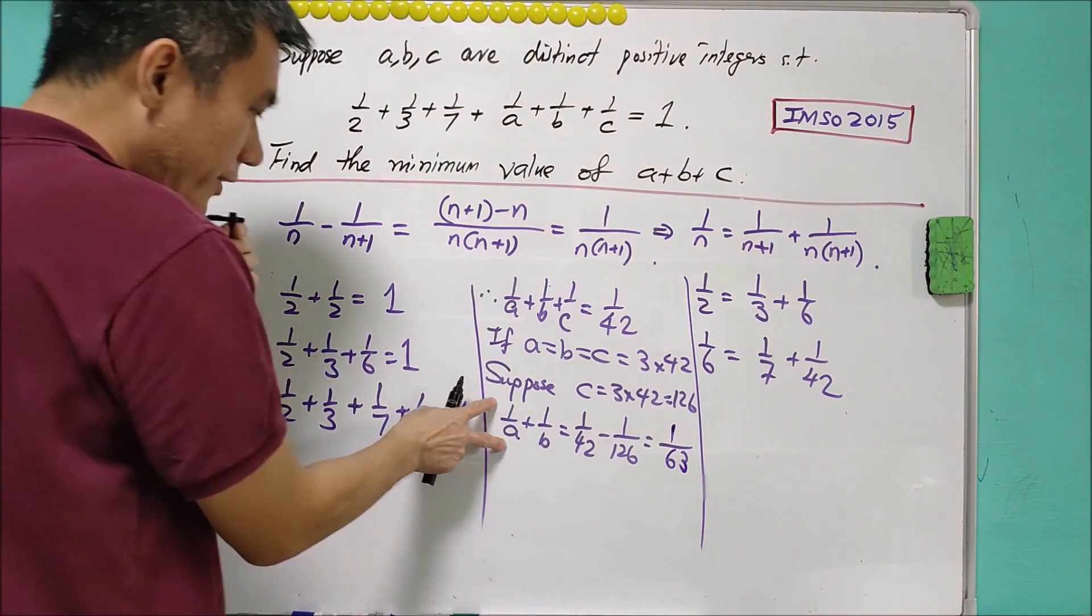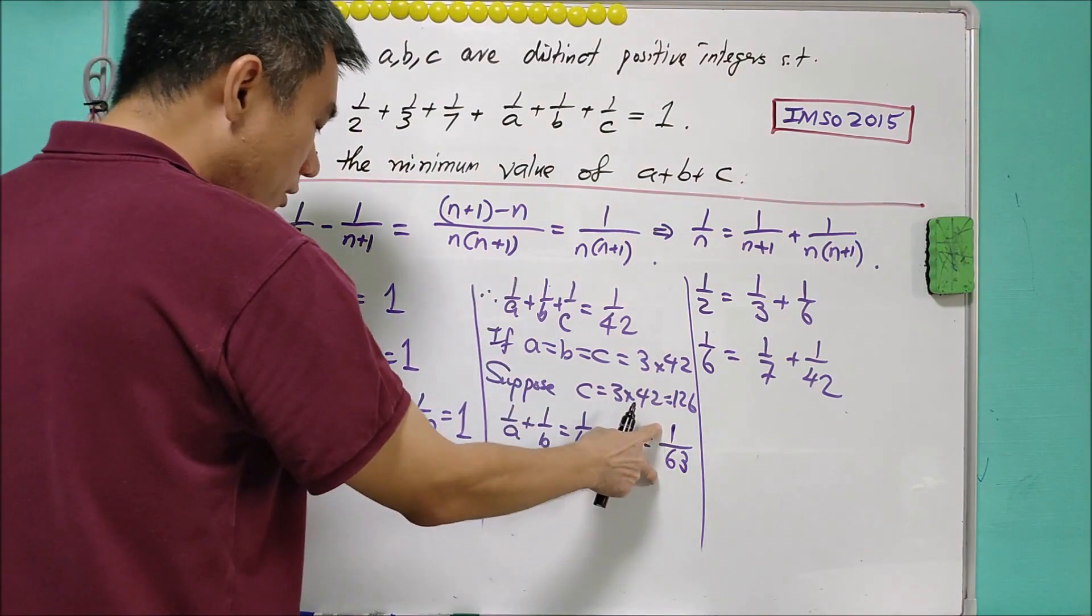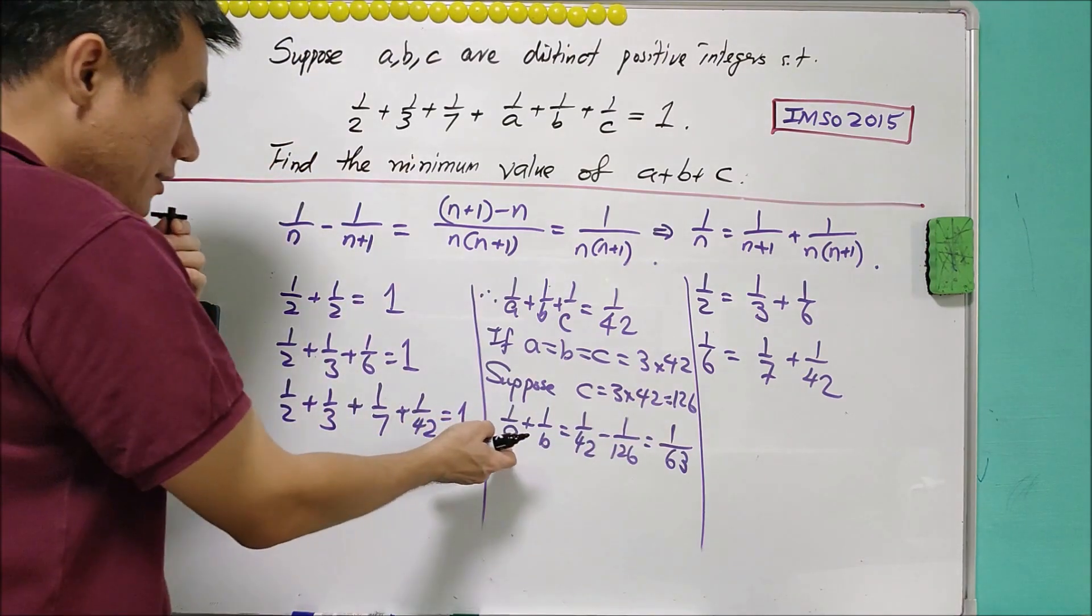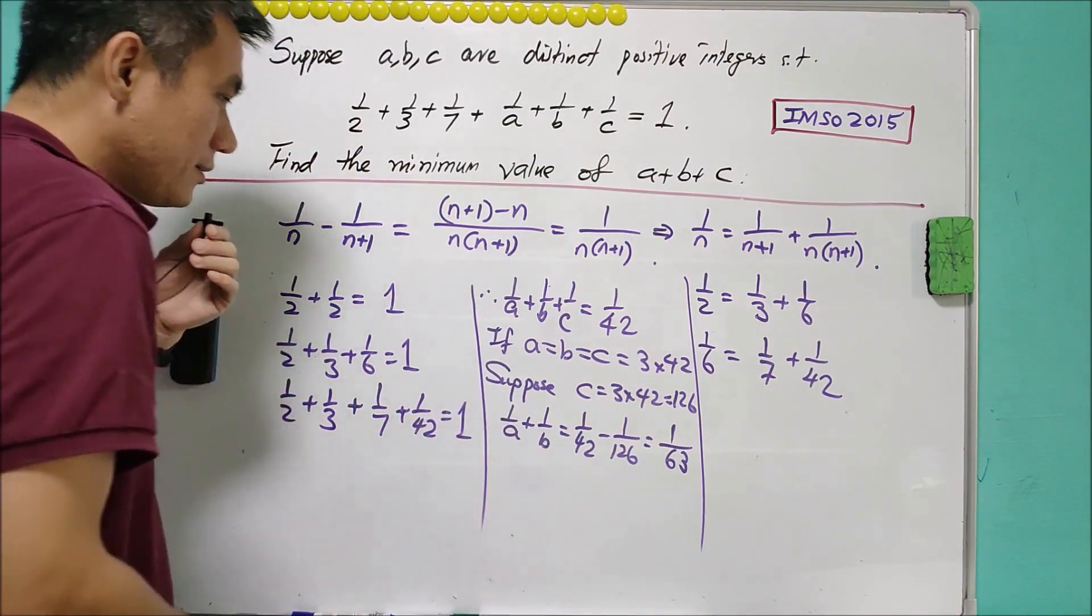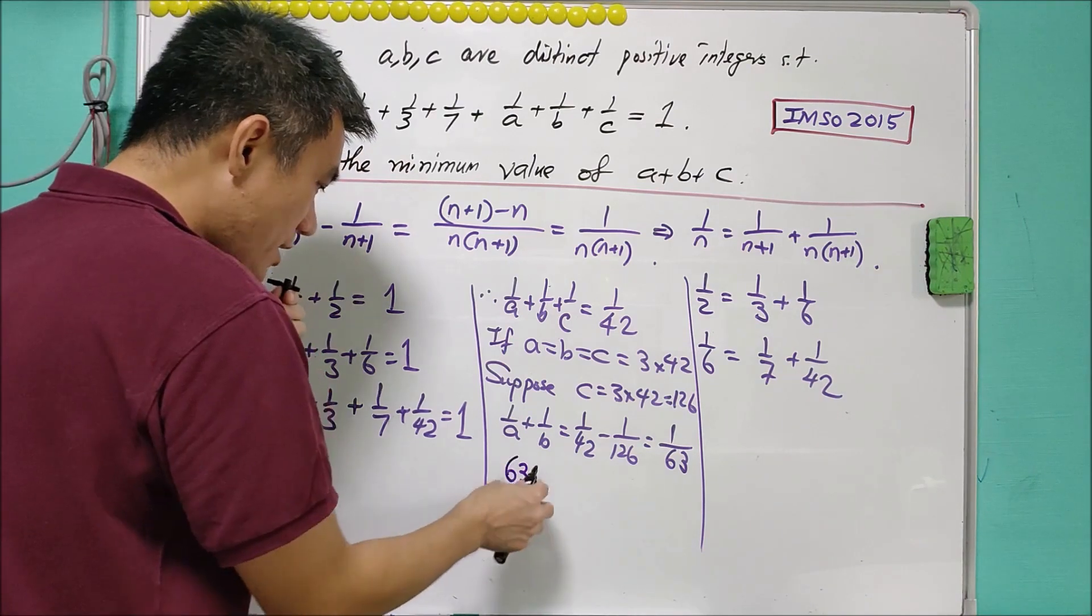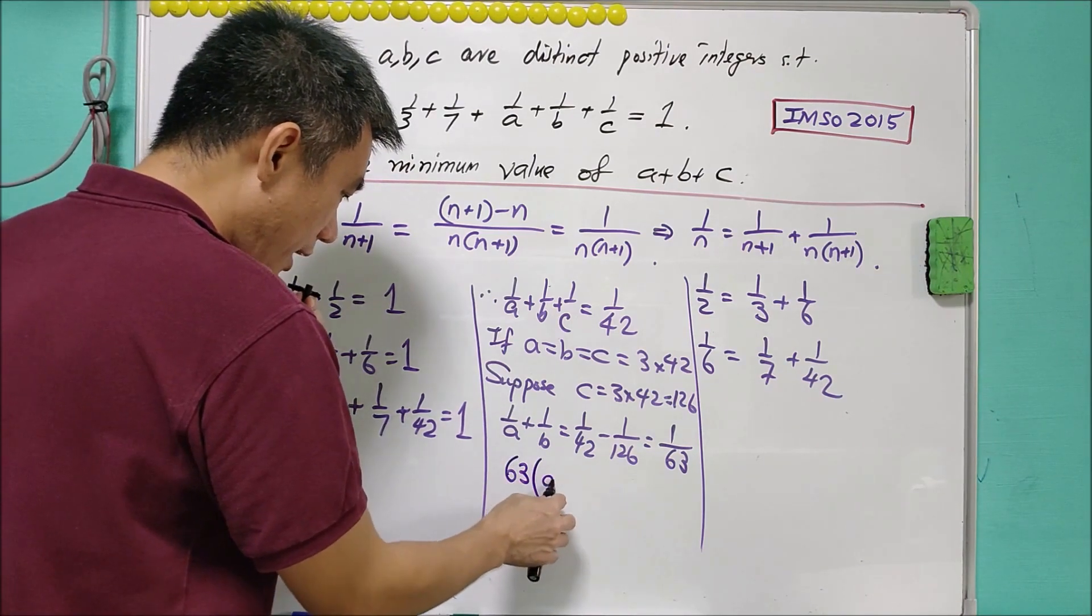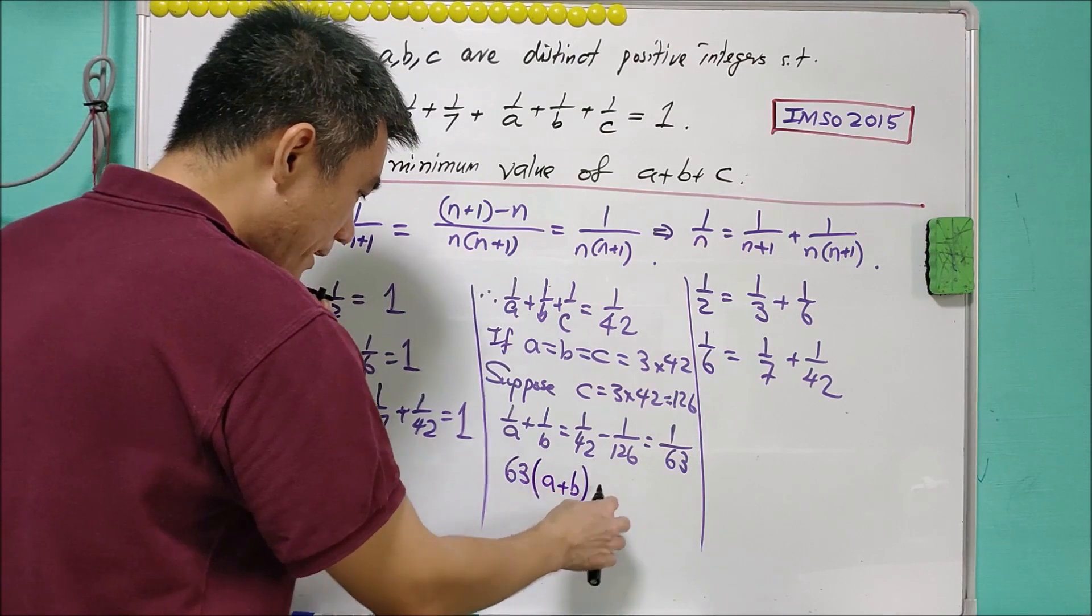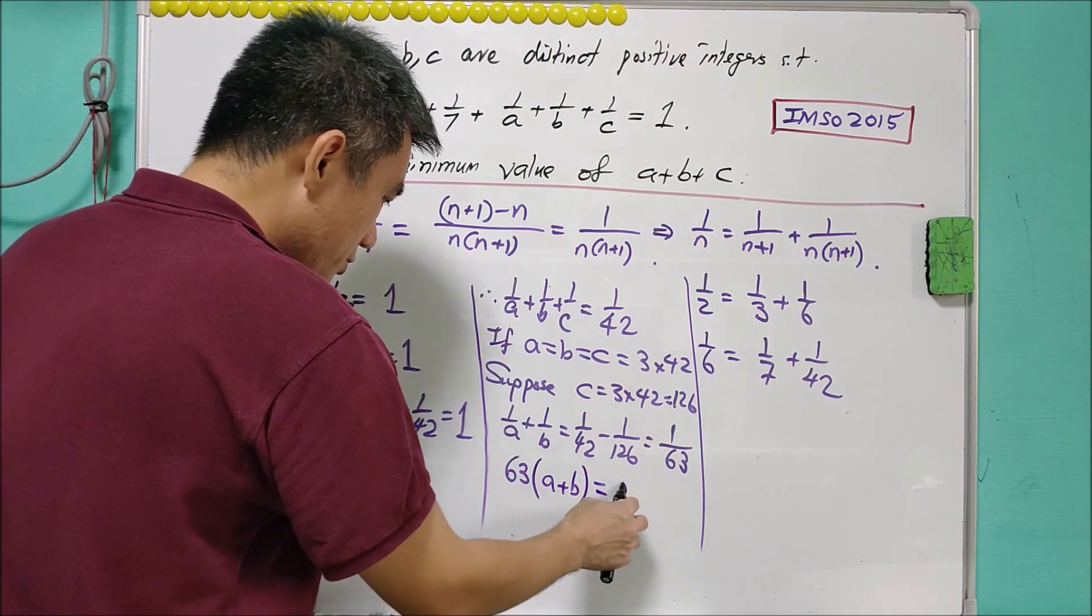So now we have 1 over A plus 1 over B equals to 1 over 63. And we can multiply each term here by 63AB. So the left-hand side will equal to 63B plus 63A. And the right-hand side will be equal to AB.